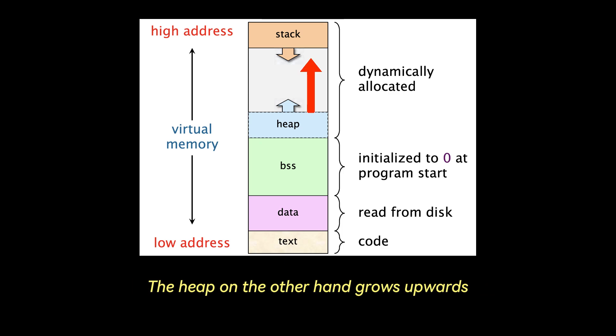The heap, on the other hand, grows upwards, so it starts low and grows upwards. It will start from a lower memory address and grow upwards towards higher addresses as you dynamically allocate memory using new or malloc.